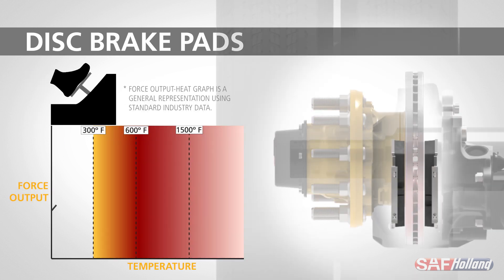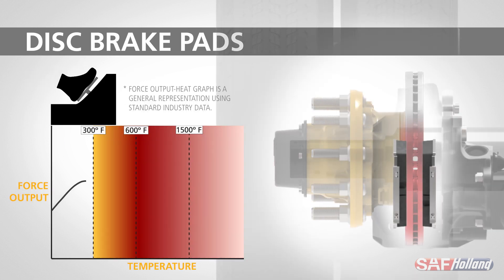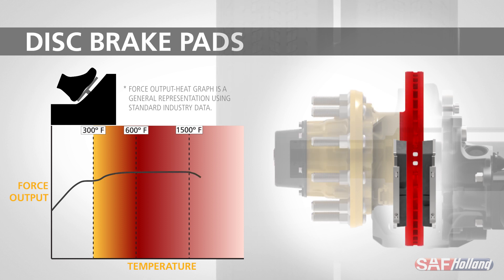Again, if we look at a graph depicting this, as the metal-based pad goes past 600 degrees, its frictional properties are unchanged. It is not until around 1500 degrees that we begin to see a fall off in braking performance.